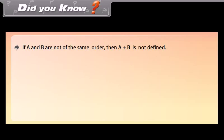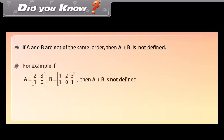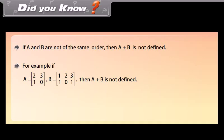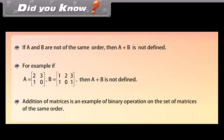Did you know? If A and B are not of the same order, then A plus B is not defined. For example, if A is a 2 by 2 matrix [2, 3; 1, 0] and B is a 2 by 3 matrix [1, 2, 3; 1, 0, 1], then A plus B is not defined. Addition of matrices is an example of a binary operation on the set of matrices of the same order.